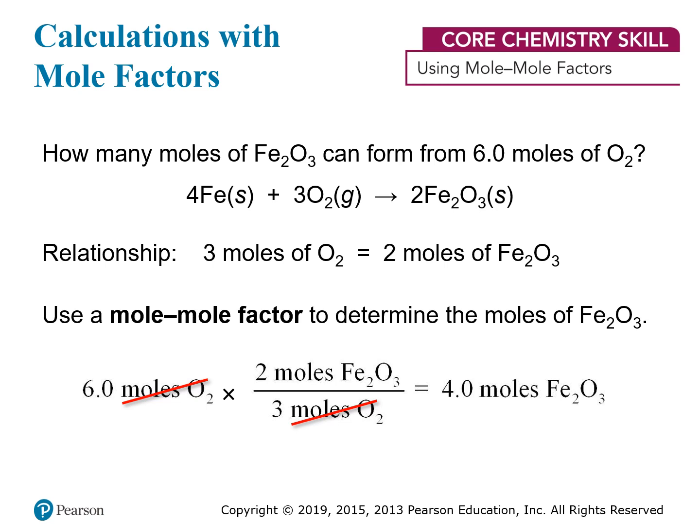Once we know how to obtain these conversion factors, we can use them to perform calculations and make predictions. If we know how much of one reactant we have, we can calculate how much of the other reactant we'll need and how much product we'll be able to get. For example: how many moles of Fe₂O₃ — that's iron three oxide — can form from six moles of oxygen? The equation is balanced: four iron and four iron, six oxygen and six oxygen. We can use the coefficients in this balanced equation to do the calculation.